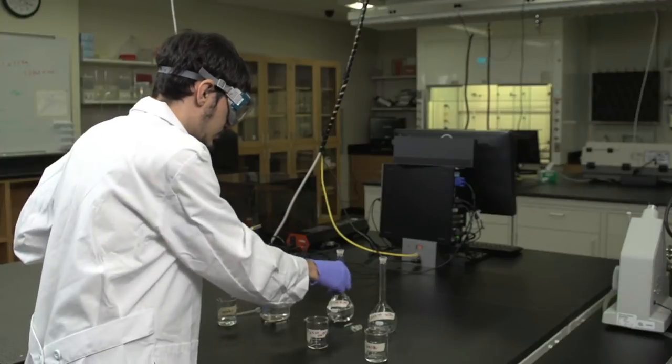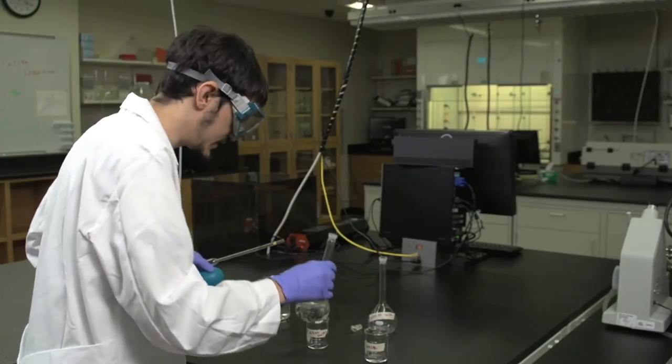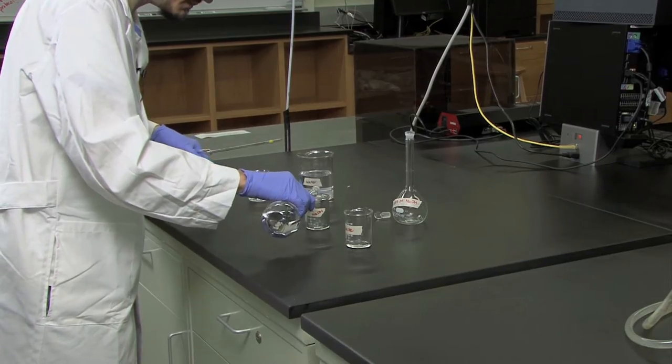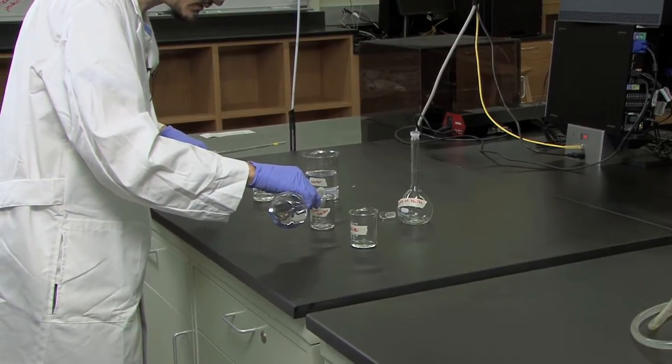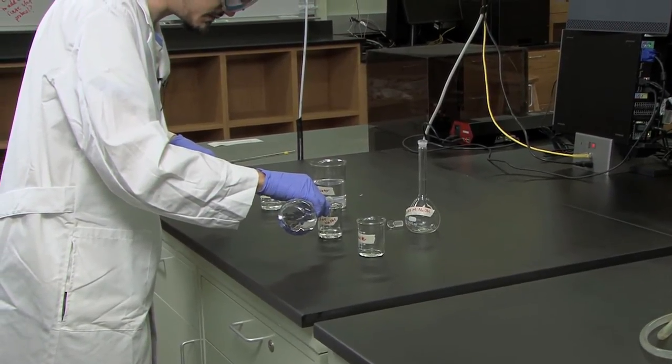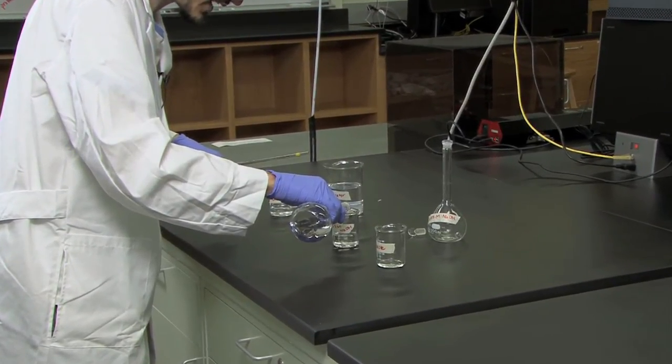Take the stock solution, or the solution from which you are going to dilute, and pour it into a separate beaker. Never pipette directly from the volumetric flask of the solution.